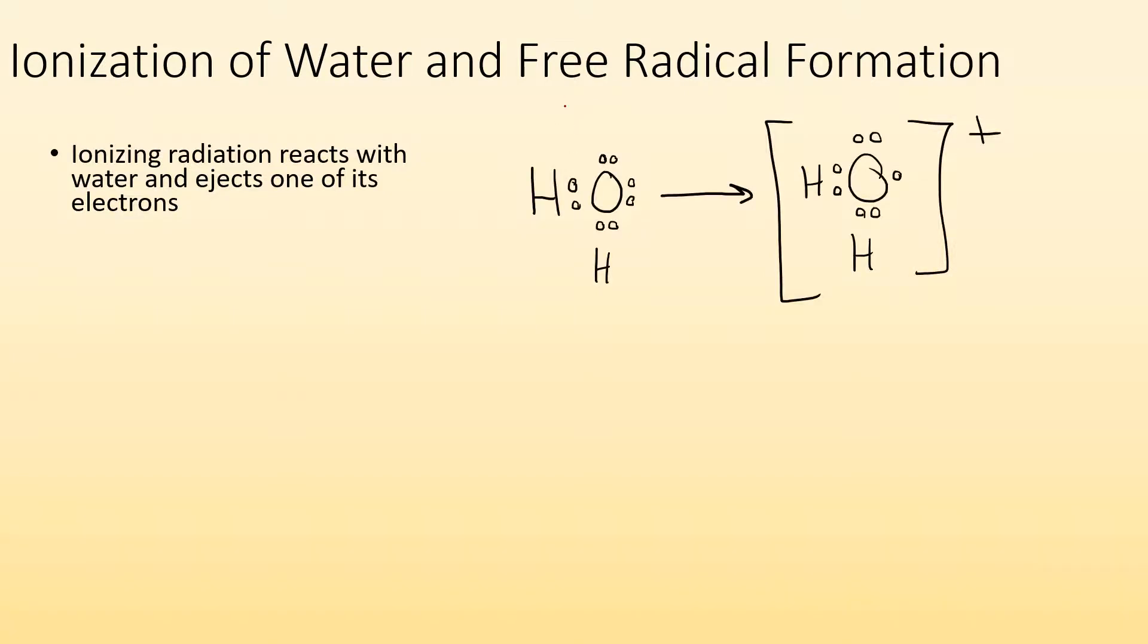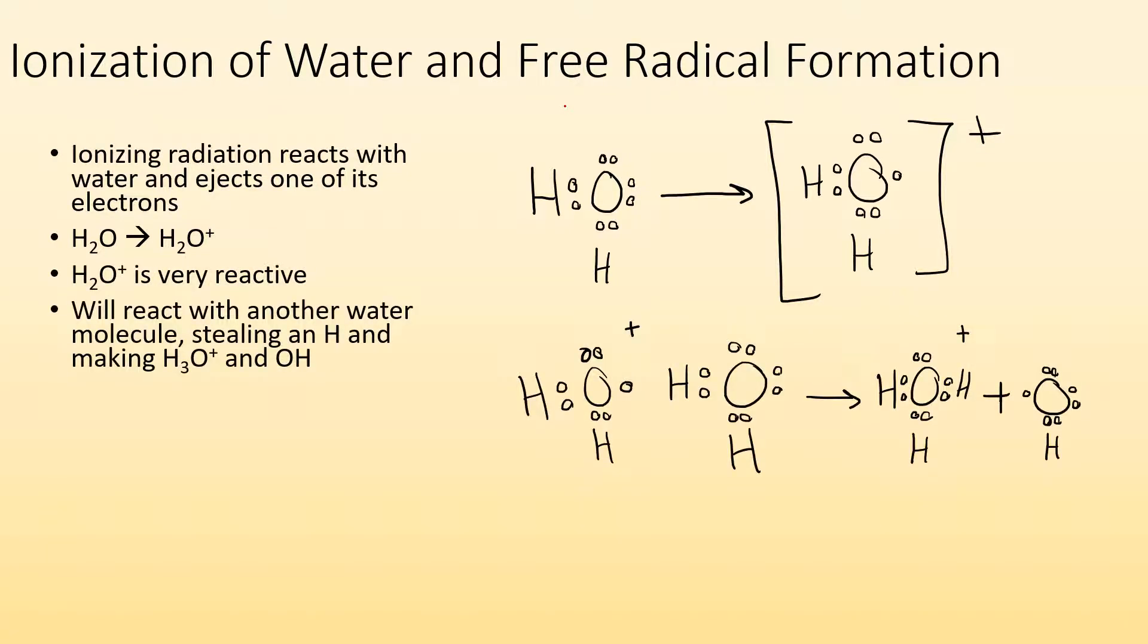So why is it a problem that we end up with H2O plus? That's not so much different than H2O. Why is it a problem? Well, the ionization radiation reacts with water and ejects one of its electrons. So we start with H2O, we end up with H2O plus. Well, so what? H2O plus is very, very reactive. It will react with another water molecule and steal a hydrogen and an electron from it. So we end up with H3O plus and this OH free radical.